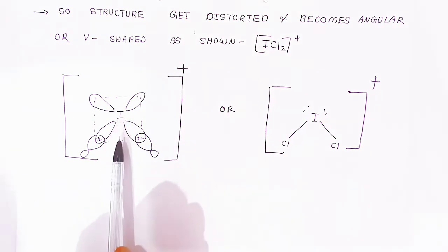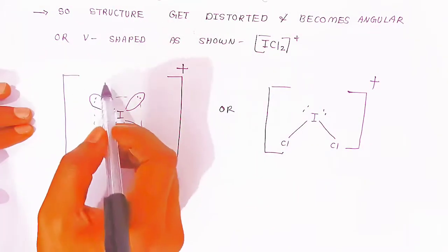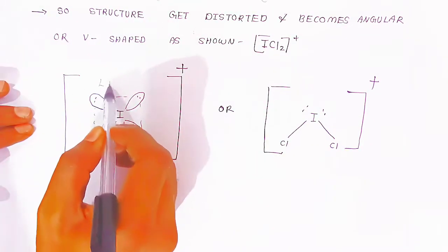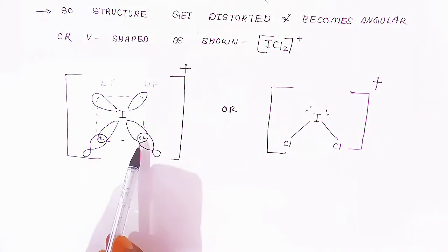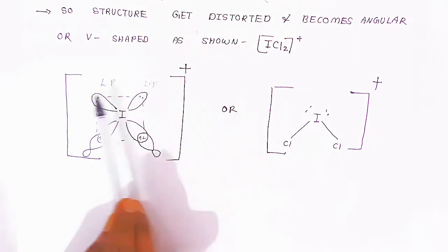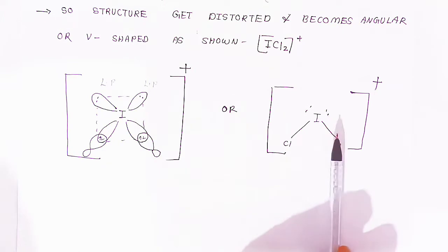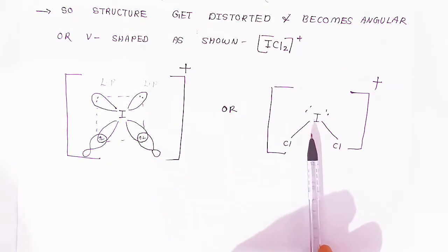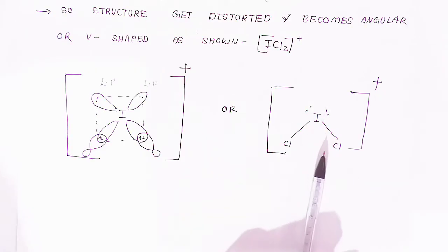In the diagrammatic representation, the 2 lone pairs and the 2 bonding pairs are shown. Because of the lone pair and lone pair repulsion, this is called a distorted type of structure — that is, a V-shaped structure — which these cations will have.